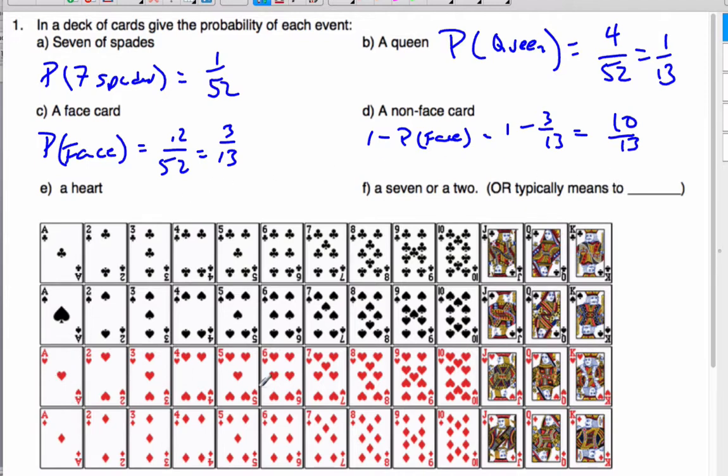Probably the heart, well, I have all these 13 hearts. It's 13 out of 52, or 1 quarter.